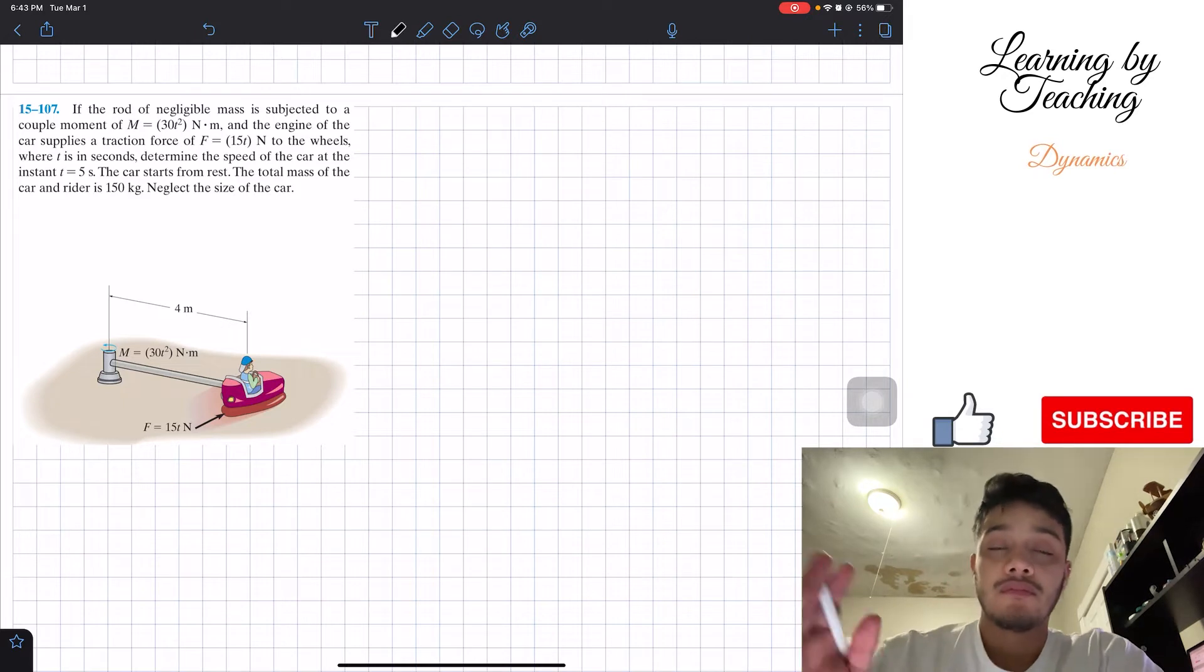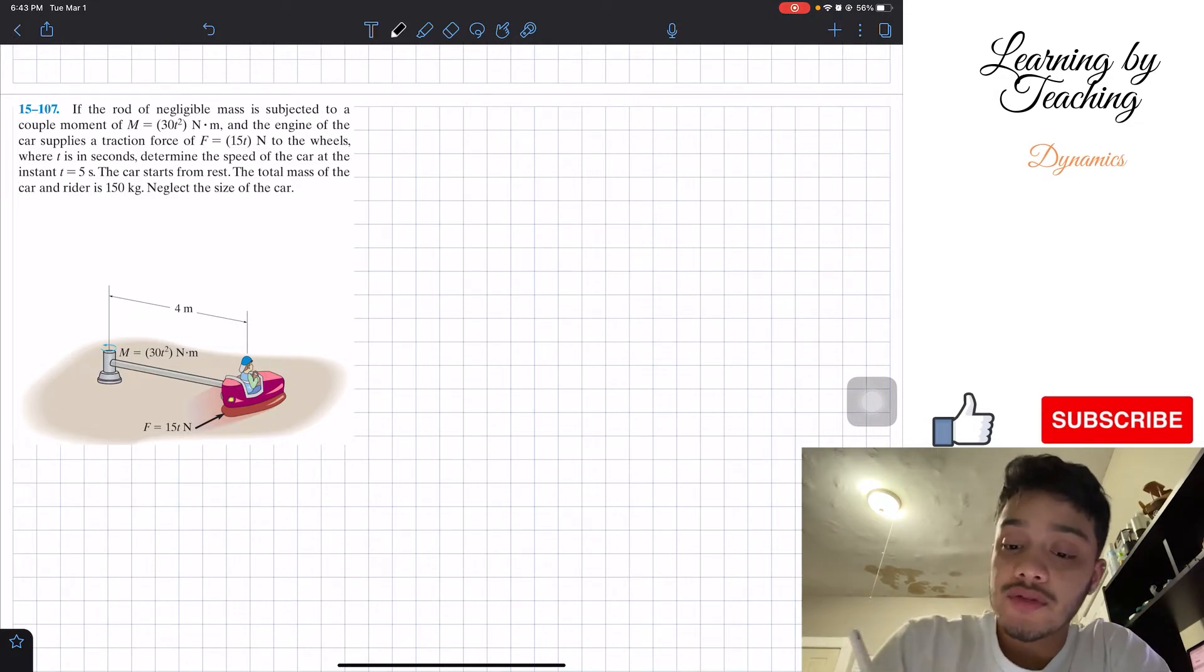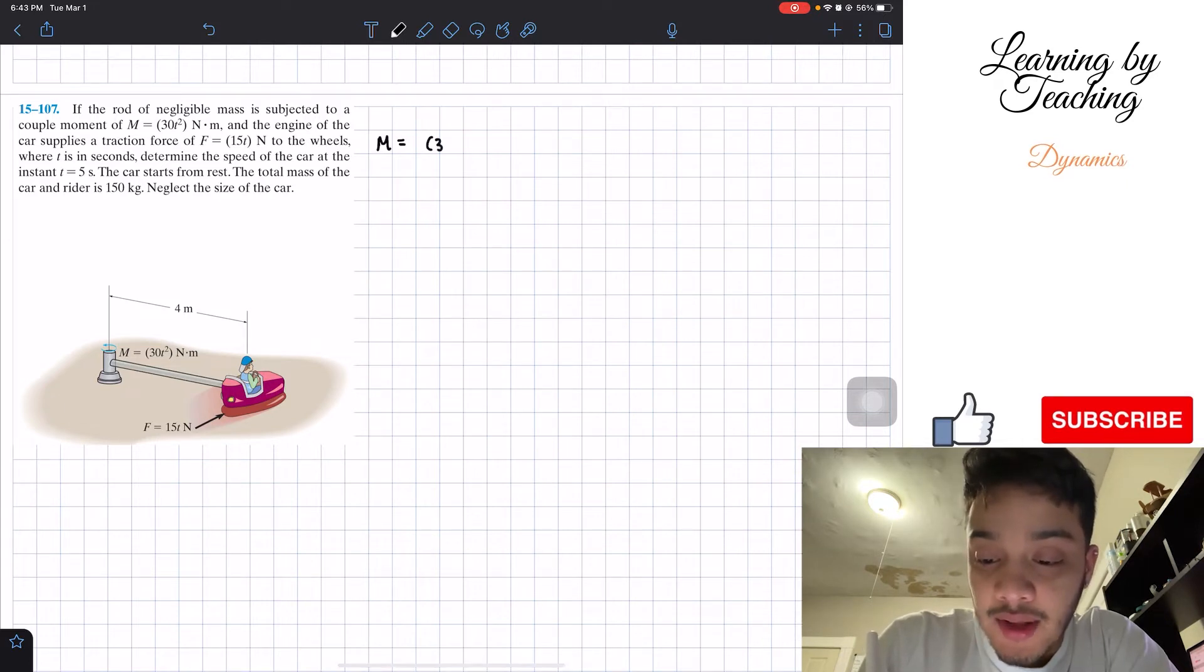The first thing I like to do in this problem, like all these guys, is just go ahead and write out my givens. We have givens that my moment is equal to 30t² and this is in newton-meters. I'm also given that the traction force is equal to 15t and this is in newtons.